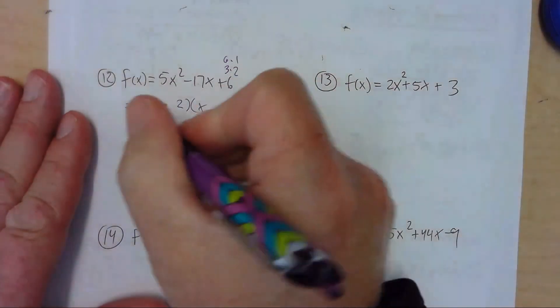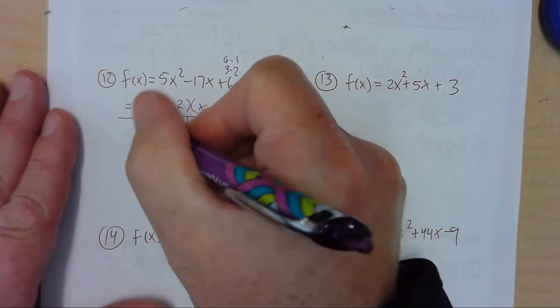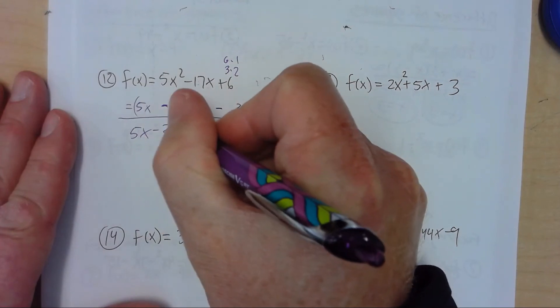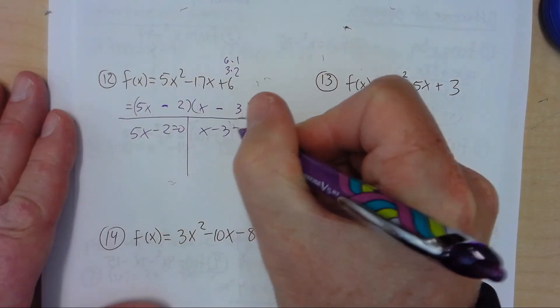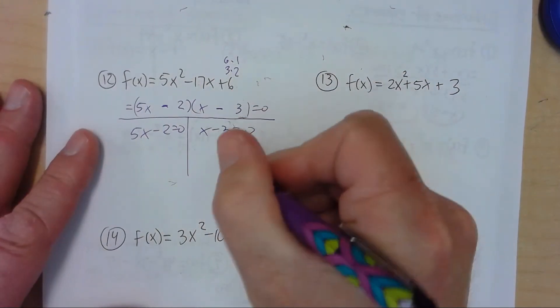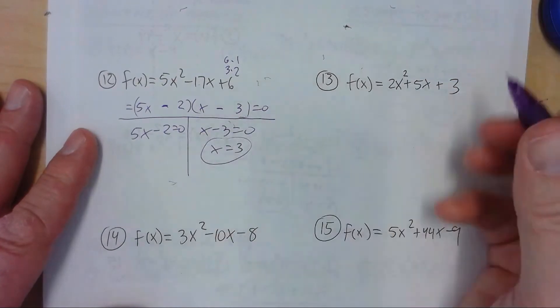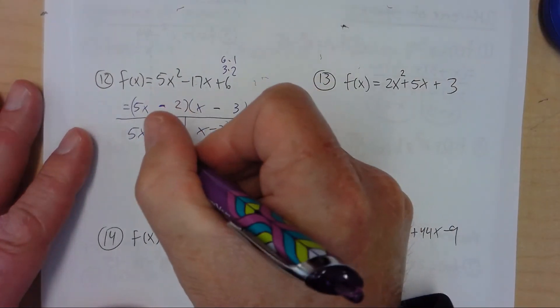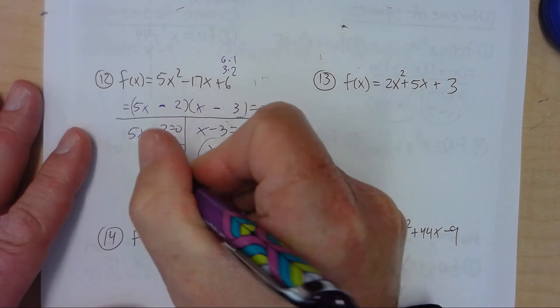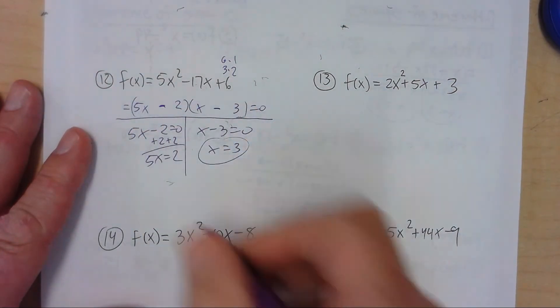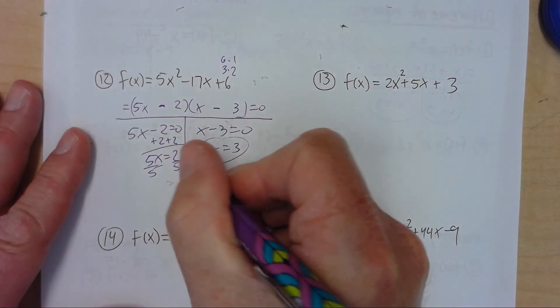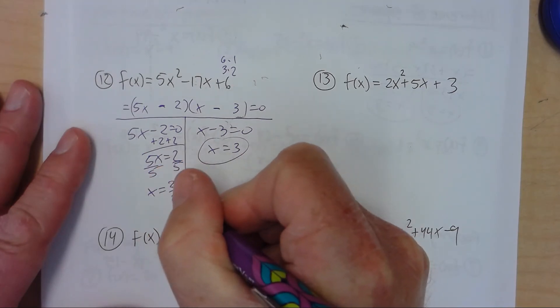Okay. And then I can just do zero product property. 5x minus 2 is equal to 0. x minus 3 is equal to 0. Add the 3 over. x is equal to 3. So this crosses at 3. Add 2. 5x is equal to 2. Divide by 5. And we get x is 2 fifths.